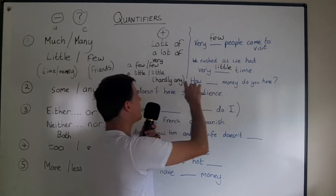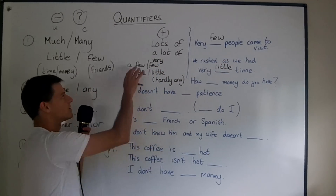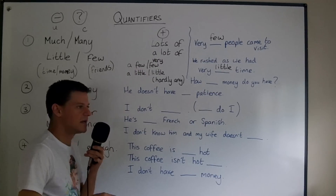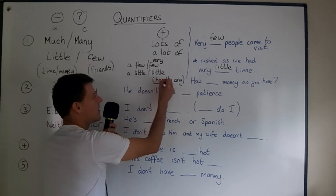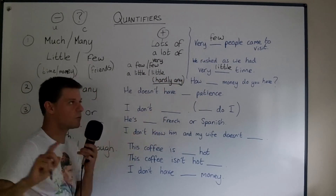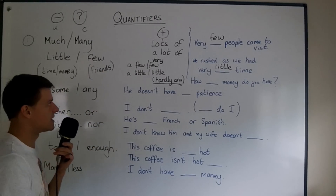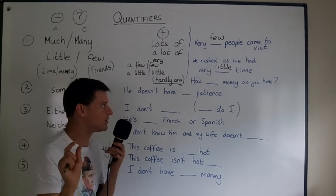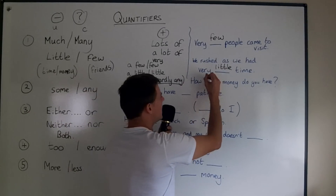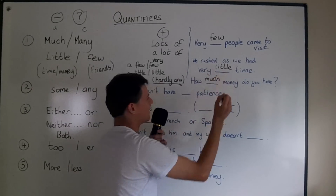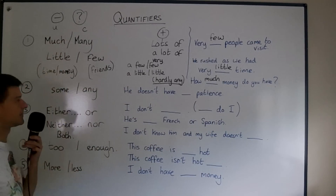Remember that 'very little' or 'very few' is stronger than 'a few' or 'a little.' It means almost nothing — hardly any — which is another word they test on part two of the FCE. So be aware: 'hardly any' means almost nothing. Lastly: 'How much money do you have?' — 'how much money' because money is uncountable.